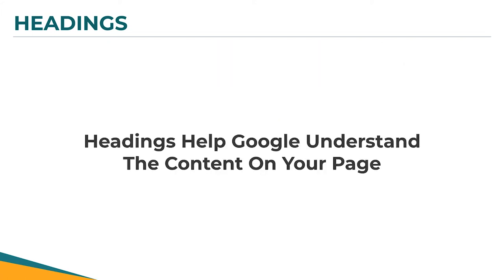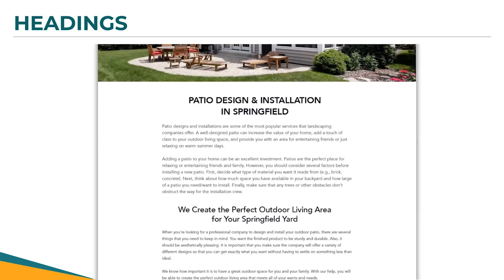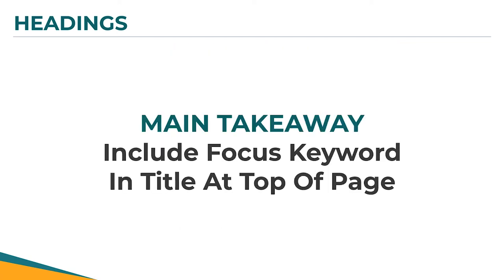Think of Google as a machine trying to understand what's on your page — like chapters in a book. If you take nothing more away from headings, it's just this: include your focus keyword at the top of your page. Like where it says 'Patio Design and Installation' — you could do everything else wrong on your page, but if you got that right, you would be leaps and bounds ahead of a lot of people when it comes to SEO.